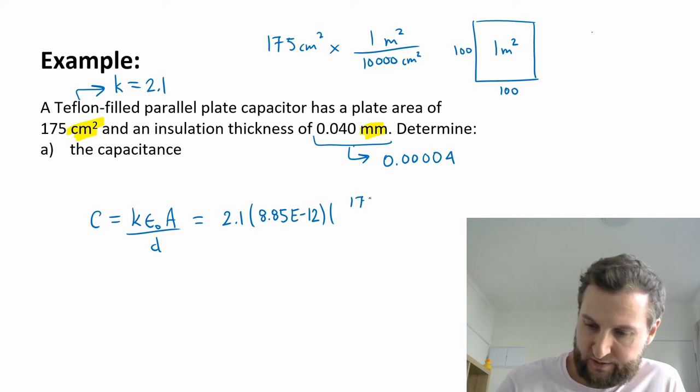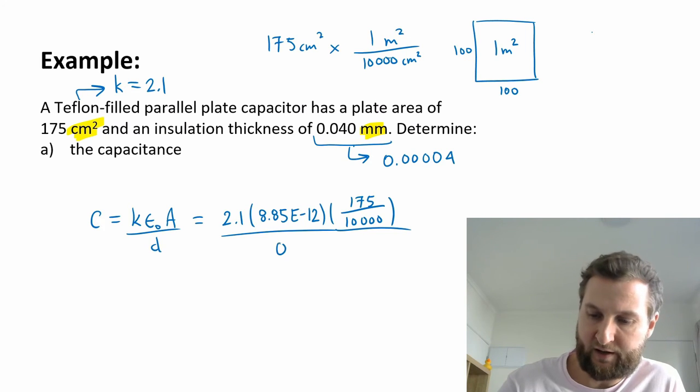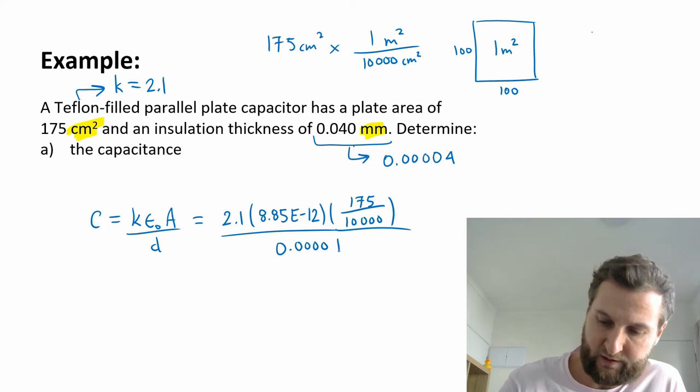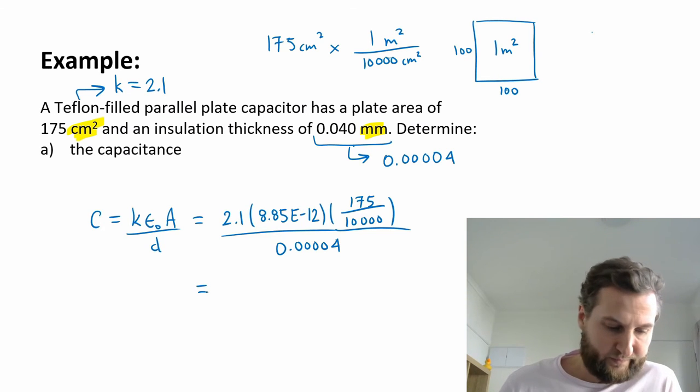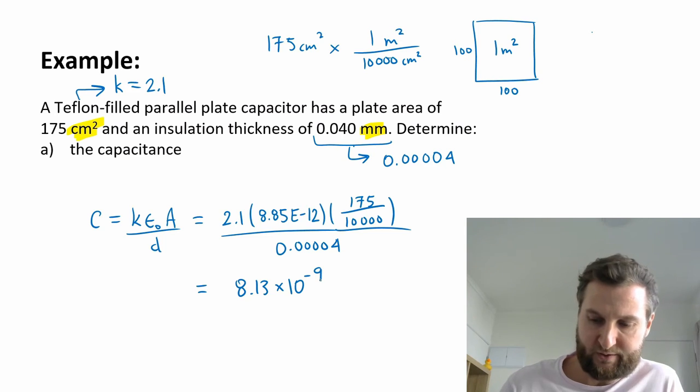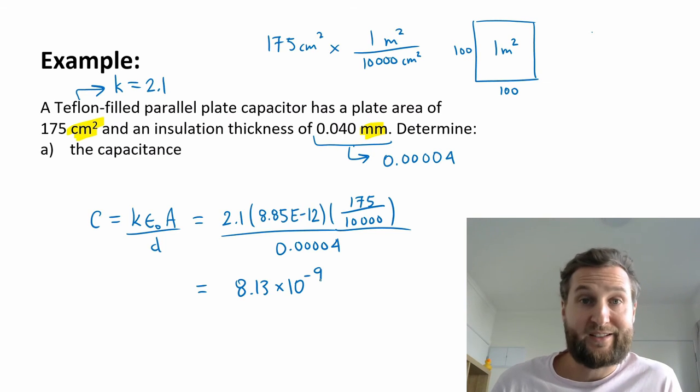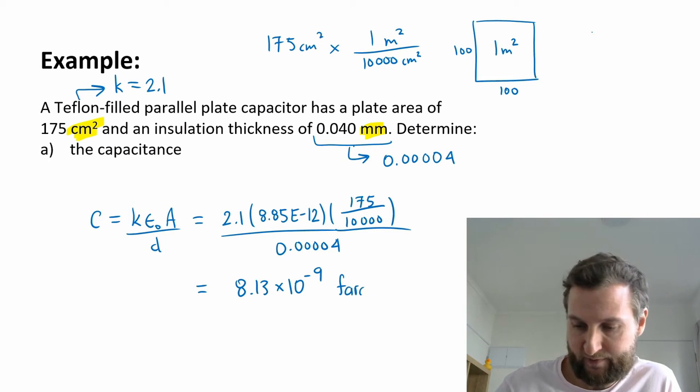As a fraction, this is 175 over 10,000. You can simplify that by 4 if you want. The whole thing now is divided by 1, 2, 3, 4, and then a 4 as my distance. This comes out to 8.13 times 10 to the minus 9. It's another very small number, and it's capacitance. So this unit is in farads. I'll write it out this time. Farads or capital F.